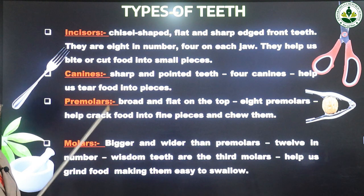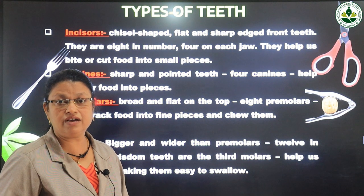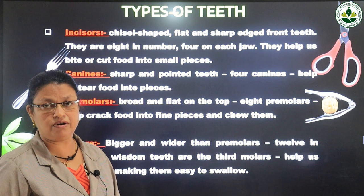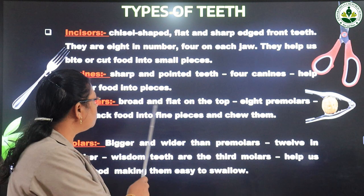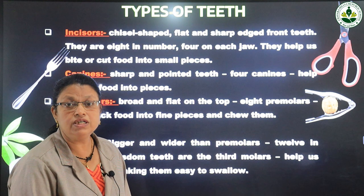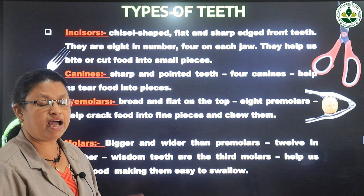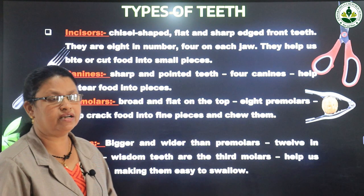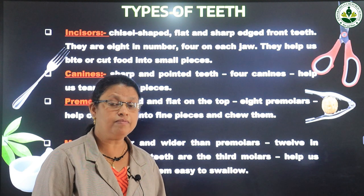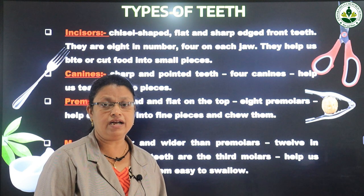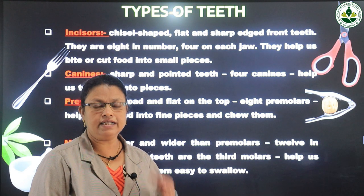Here is a picture of a fork. Just as a fork is used to tear meat and flesh, canines are also used to tear food. Canines are sharp and pointed.